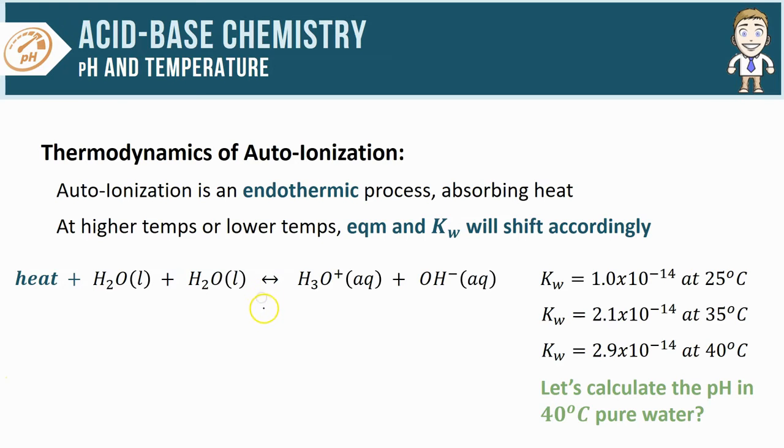So let's maybe start off by setting up a quick little ICE table here. Initially I have no products made, 0, 0. As we approach equilibrium I'll be producing equal amounts of each product, so once equilibrium is achieved I should have equal quantities of H3O+ and OH-. Next I'll take that equilibrium row of the ICE table and plug it into my K expression.